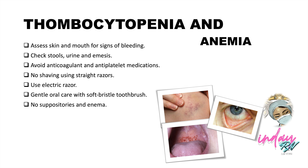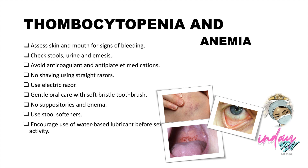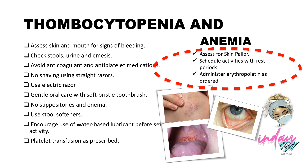Remember that we are preventing further complications and always prioritizing patients' welfare. Use stool softeners to prevent straining and rectal bleeding. Encourage use of water-based lubricant before sexual activities, and administer platelet transfusions as prescribed. For anemia, assess for skin pallor, schedule activities with rest periods, and administer erythropoietin as ordered. Scheduling rest periods is important because low hemoglobin means reduced oxygen delivery — we need to prevent fatigue.